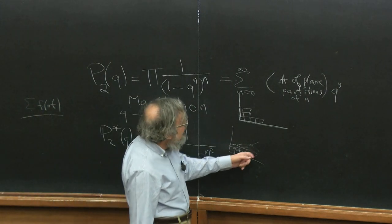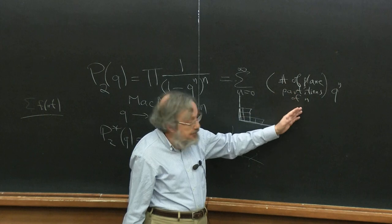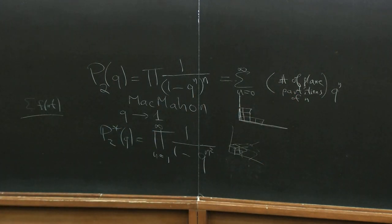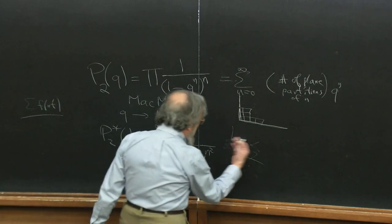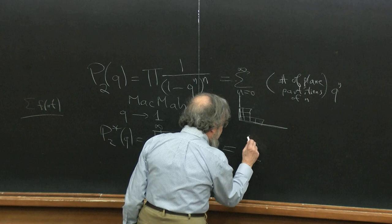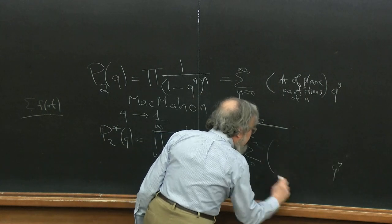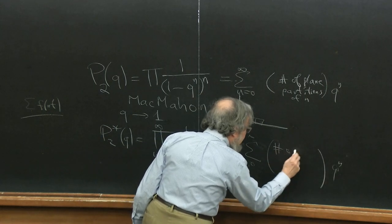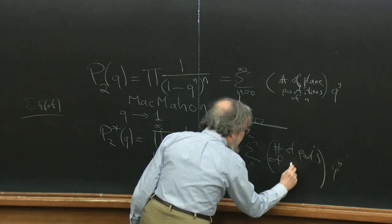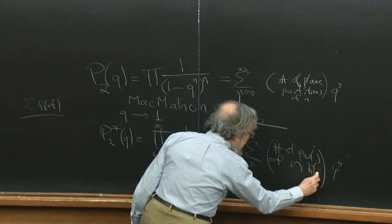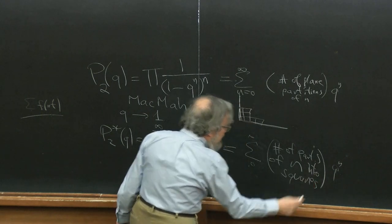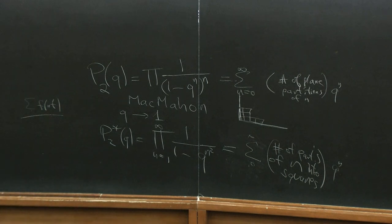Strange enough, in dimension three it turned out — I think physicists proved it — it is the same as McMahon's function. And this one of course has an even more obvious interpretation. This was already in the paper of Hardy and Littlewood. This is the sum of q to the n times the number of partitions of n into squares, and this was already treated in the famous 1918 paper of Hardy and Ramanujan.